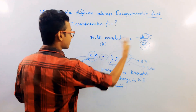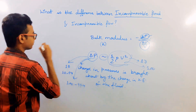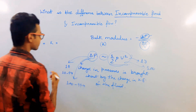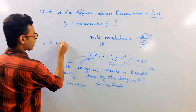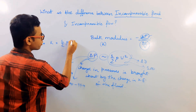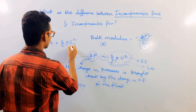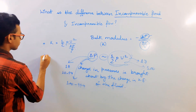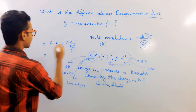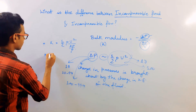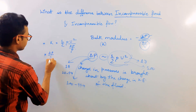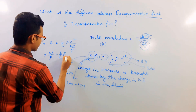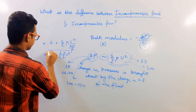Now I am going to relate it with K. Doing the further simplification: K equals (½ρu²) divided by (Δρ/ρ). So I can write Δρ/ρ equals ½ρu²/K, or equivalently, Δρ/ρ equals ½(ρ/K)·u².